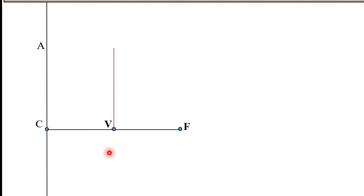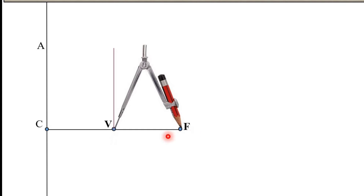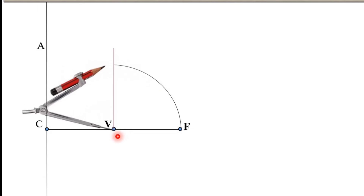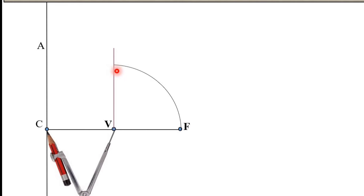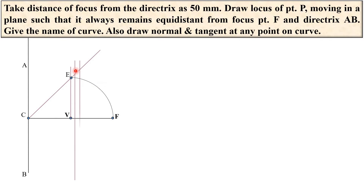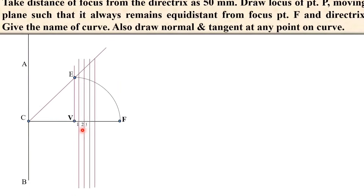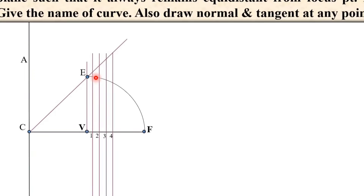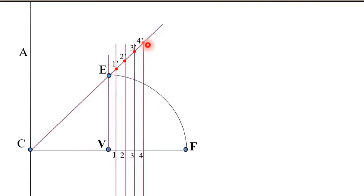Now draw the vertical line passing through point V. Initially you can take the length randomly. Set the compass with radius VF and draw the arc with V as the center so that you will get an intersection point — mark it as point E. Join CE and extend it. Next, draw vertical lines between V and F with approximately equal divisions; you can take 4 or 5 lines. Keep in mind these distances are not fixed. Give the names 1, 2, 3, 4, and you will get the corresponding points 1 dash, 2 dash, 3 dash, and 4 dash.